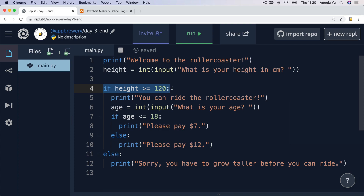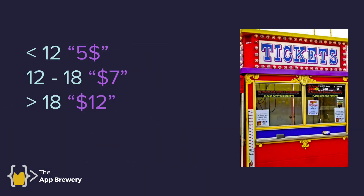Now let's say our situation got a little bit more complex. The boss comes over, checks our code, and says, wait — there's actually more price tiers than that. In fact, if you're less than 12 years old, you pay $5. If you're between 12 and 18, you pay $7. And if you're over 18, then you pay the full adult price, which is $12. Now there are three possibilities, so how do we represent this in our if-statement?